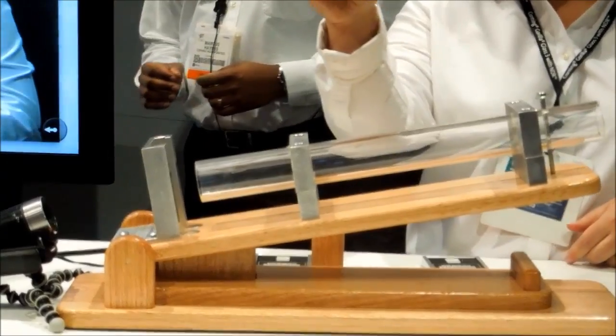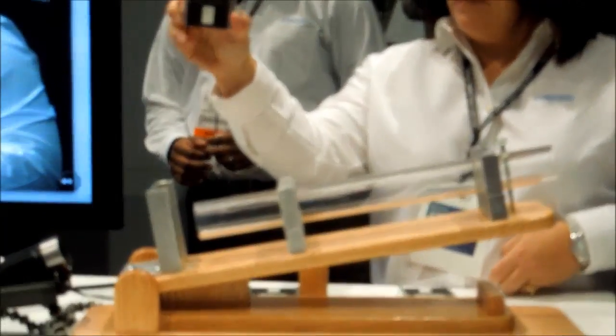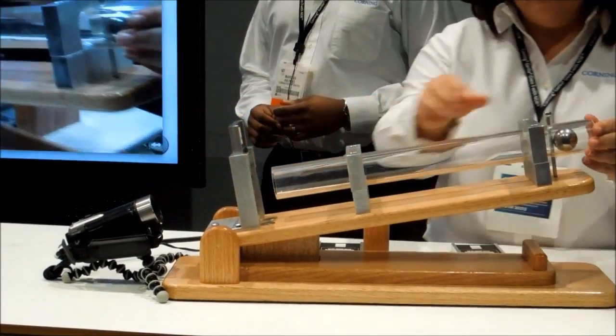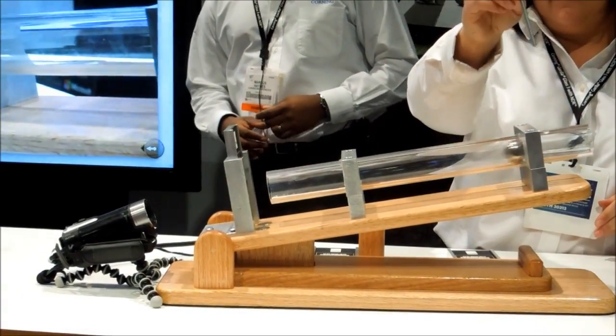So now we're going to do the same thing with Corning Gorilla Glass 3 with the same 7-newton scratch and the same 0.7 millimeters thick and the same 10-degree incline. So Lisa's going to load it to the left. Sorry, Lisa.